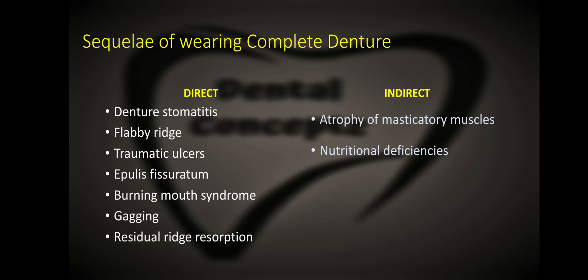What are the different sequelae of wearing a complete denture? These sequelae can be divided into direct and indirect sequelae. The direct sequelae include denture stomatitis, flabby ridge, traumatic ulcers, epulis fissuratum, burning mouth syndrome, gagging, and residual ridge resorption. The indirect sequelae are atrophy of masticatory muscles and nutritional deficiencies.